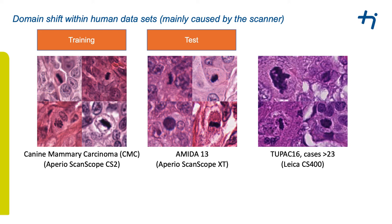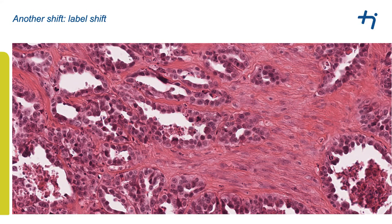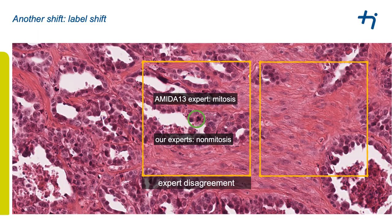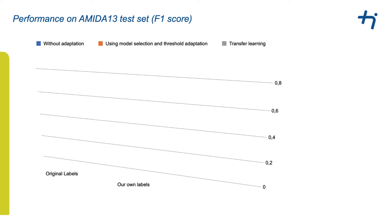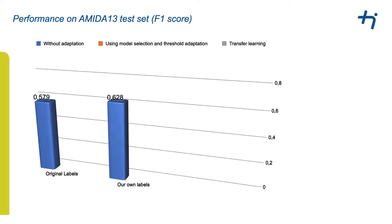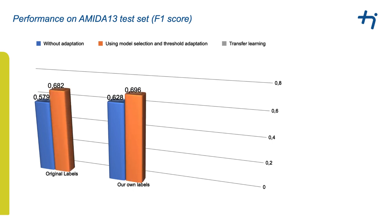However, there is another shift between the datasets to discuss: expert disagreement related to different decision cutoffs, and mitotic figures missed in the AMIDAS dataset due to a different annotation workflow. Fortunately, we re-annotated the entire TUPAC16 mitotic figure dataset using the same experts and methodology to reduce these effects. Training a dual-stage model on our dataset and running inference on the AMIDAS-13 test set yielded an F1 score of 0.628. Using model selection and threshold adaptation, this increased to 0.696, and with transfer learning using the AMIDAS training set, to 0.733.